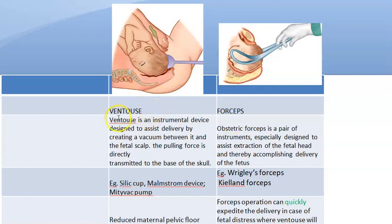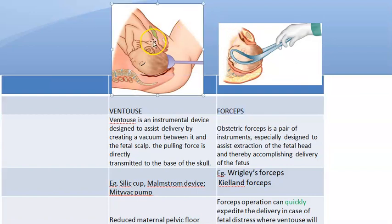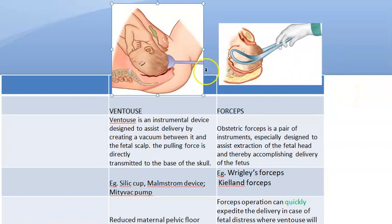Hello, in this video let us look at the differences between ventouse and forceps. Both of these are instrumental deliveries - instrumental or operative obstetrics. Basically both are trying to achieve vaginal birth, but sometimes these are used even in cesarean delivery.